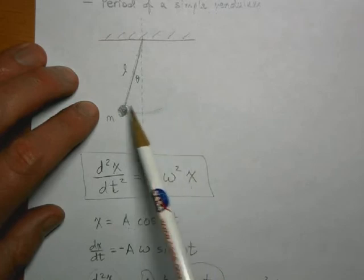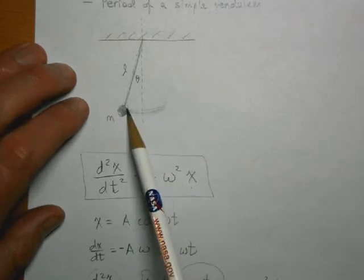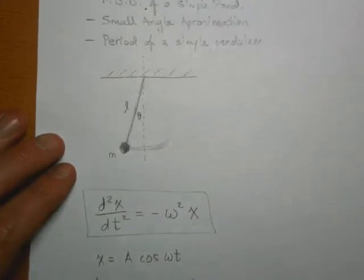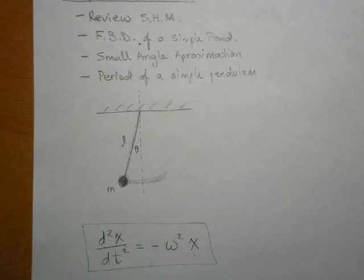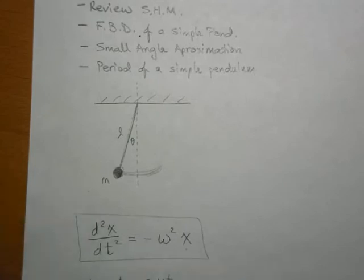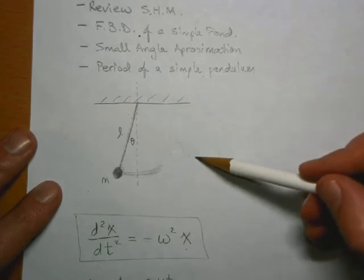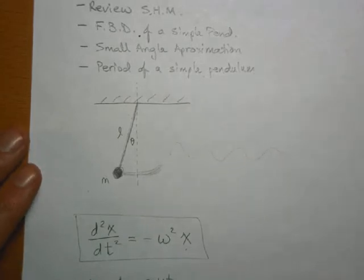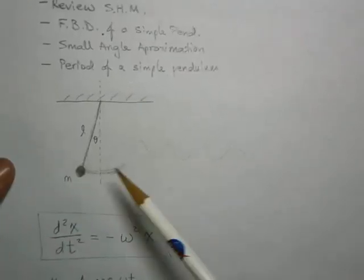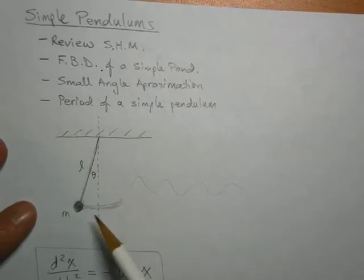If we have a simple pendulum and I hold this mass and release it, it's going to swing back and forth. If I trace the path that this makes over time it should look like a sine wave or a cosine wave. You can pause the video right now, get a little mass on a string, let it oscillate back and forth with the angle fairly small, and you'll see that tracing it out over time gives you a sinusoidal wave.